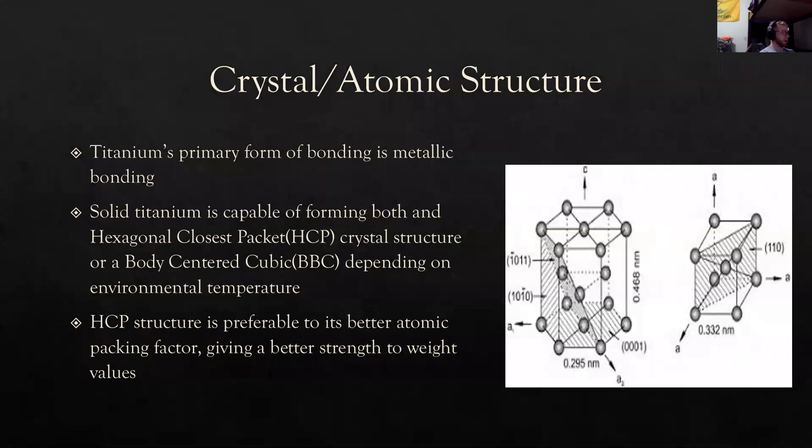The crystal and atomic structure of titanium. So titanium's primary form of bonding is metallic bonding, and titanium actually has incredibly strong bonding between its titanium atoms. Solid titanium is capable of forming both hexagonal closed packet crystal structure (HCP) or a body-centered cubic system (BCC) depending on the environmental temperature.